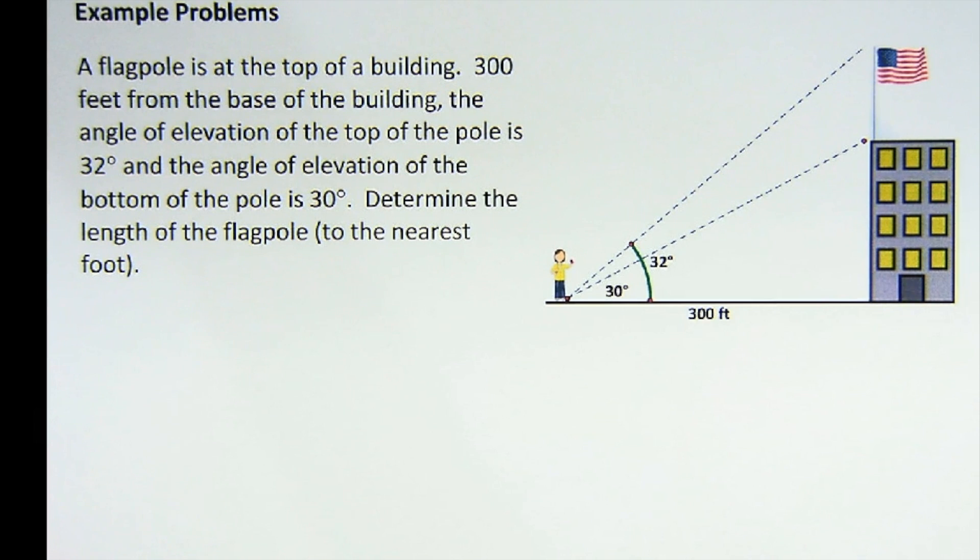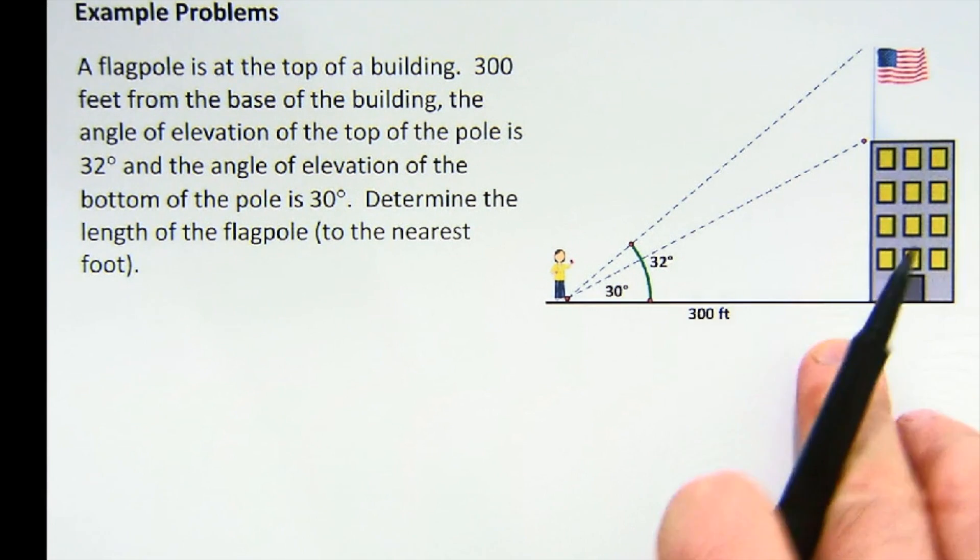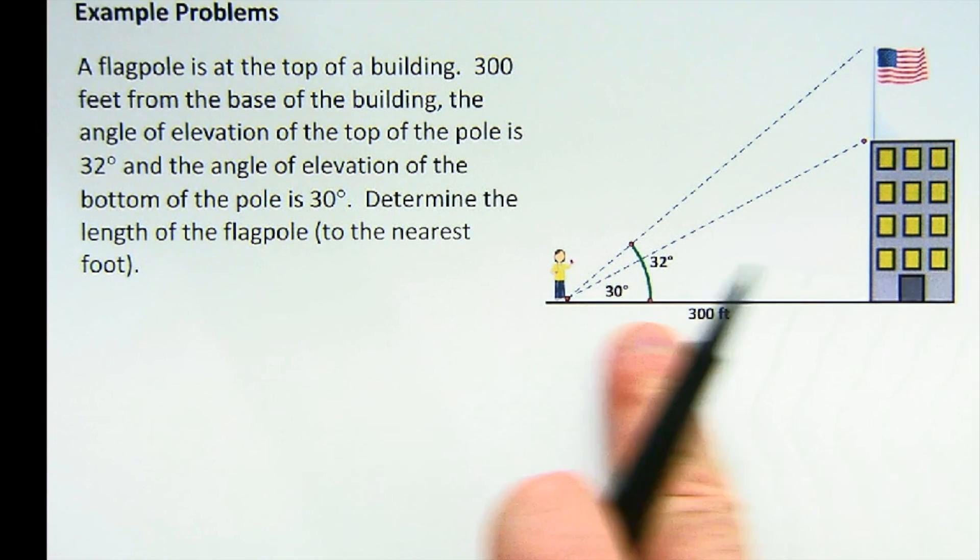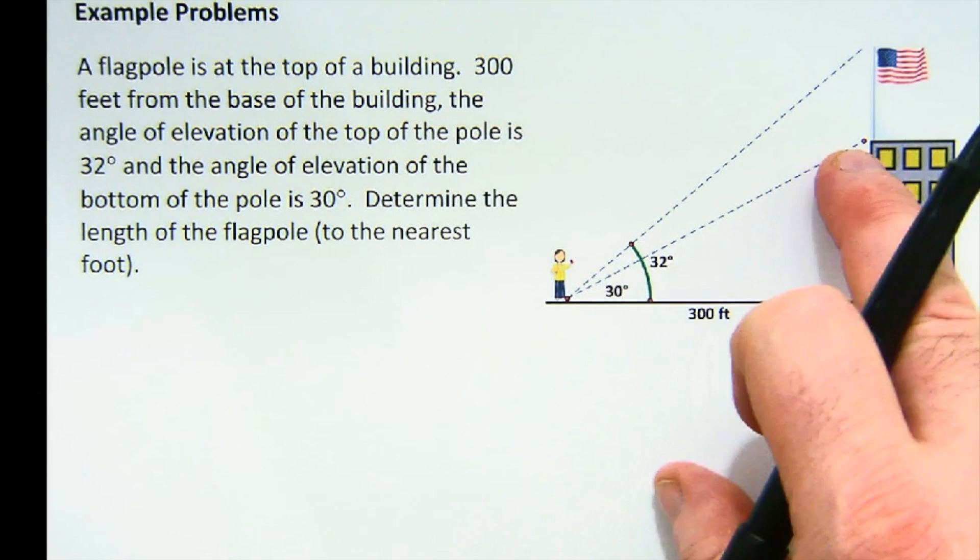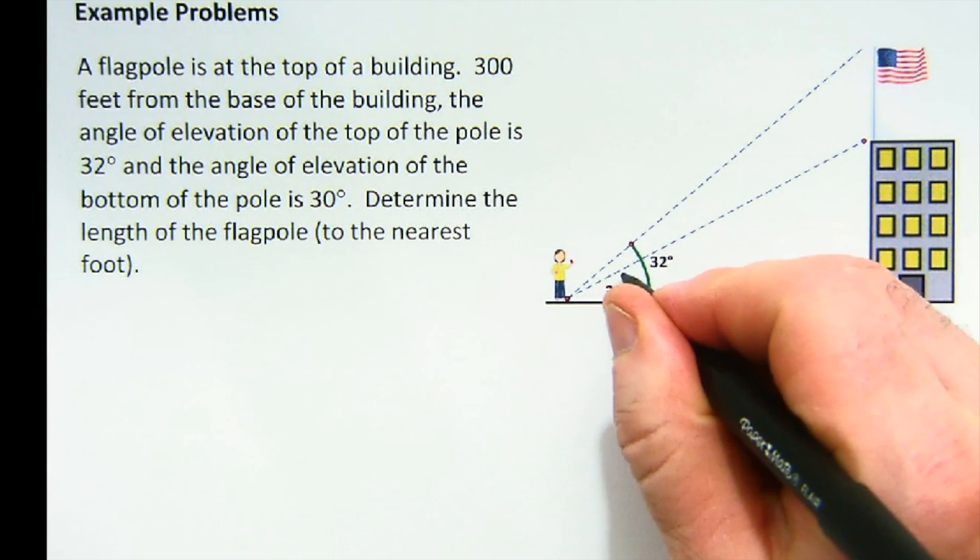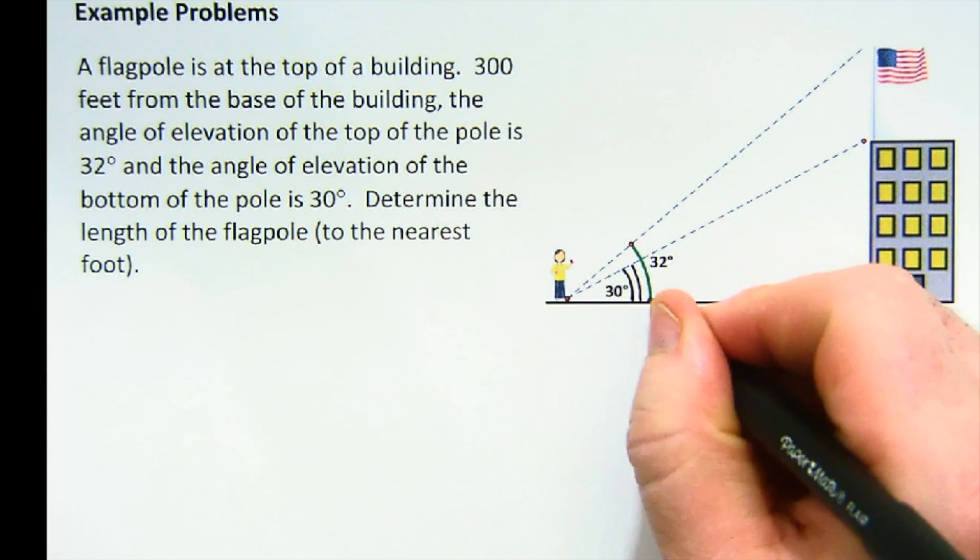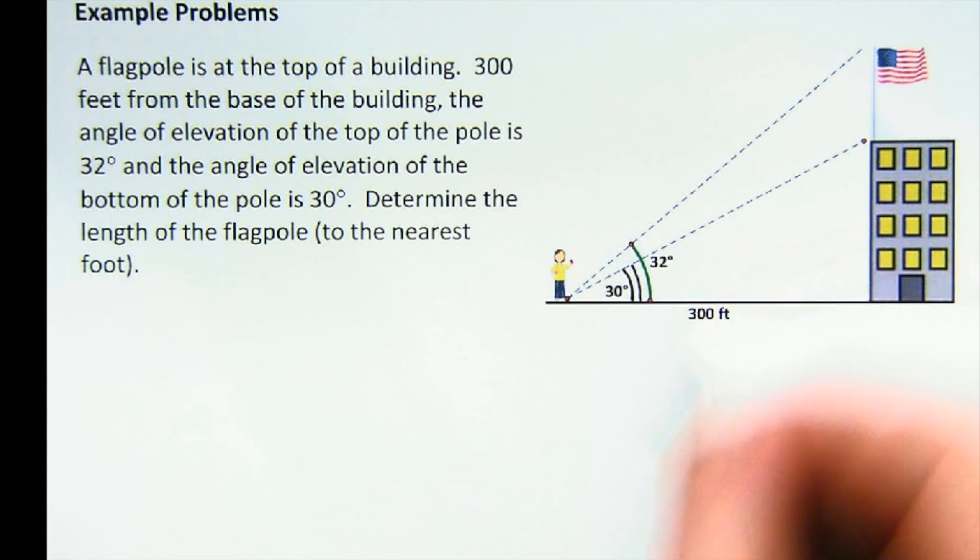Why these are a little step up is because they usually involve two trig relationships to solve it, not that they're greatly more difficult. First of all, there's a flagpole sitting on the top of the building, 300 feet away is the person. They look up at the base at 30 degrees, so 30 degrees is this part here and the 32 is the bigger angle.